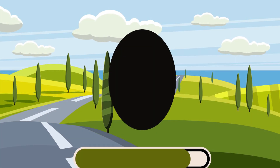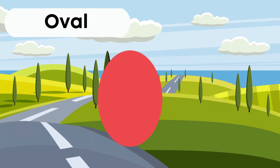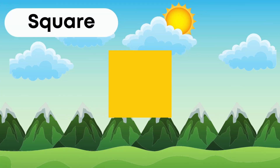Which shape is this? This is an oval. Oval. Which shape is this? This is a square. Square.